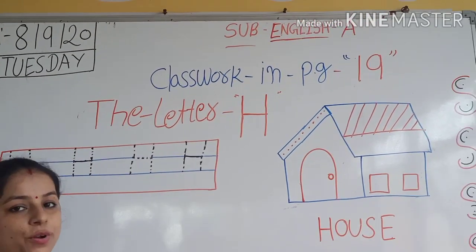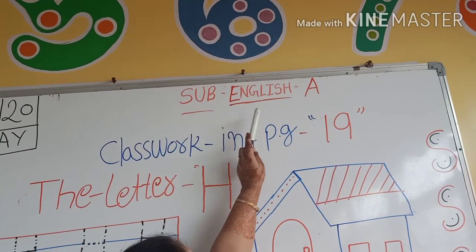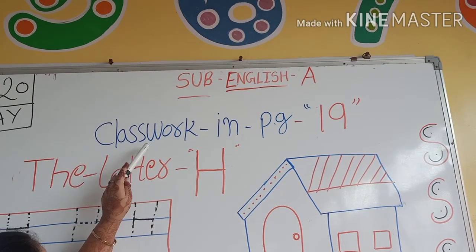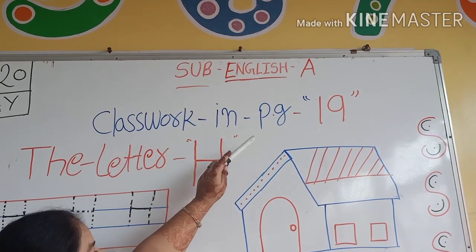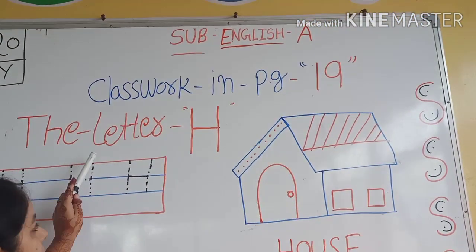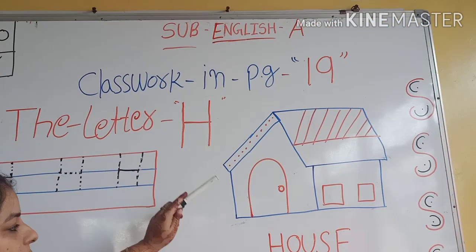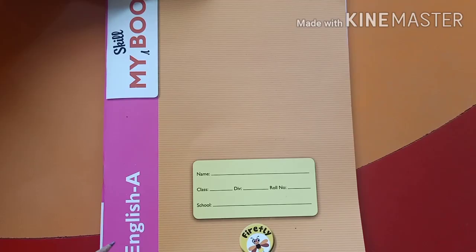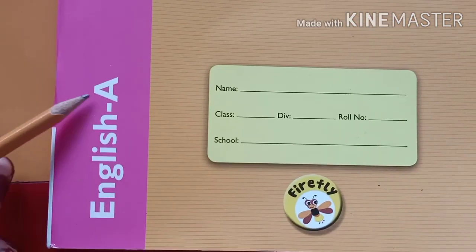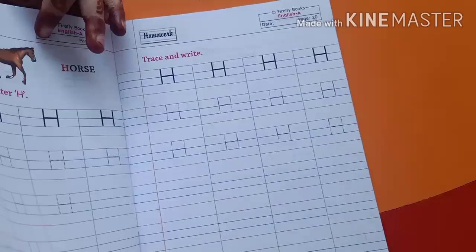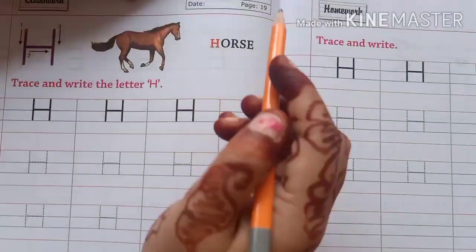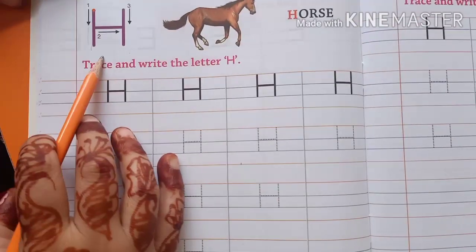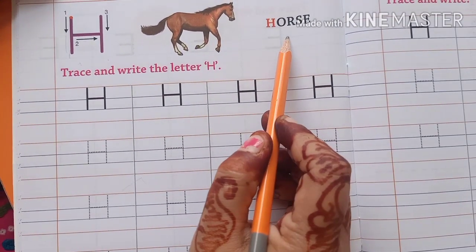Our today's subject is English A, and class work is page number 19. The letter H. H for house. Kids, take this book — English A — and open page number 19. H. H for house.